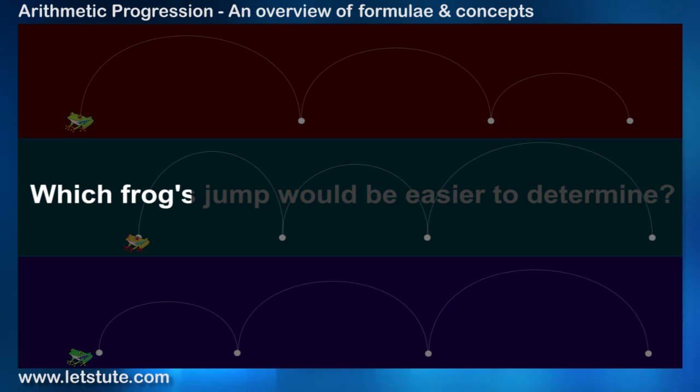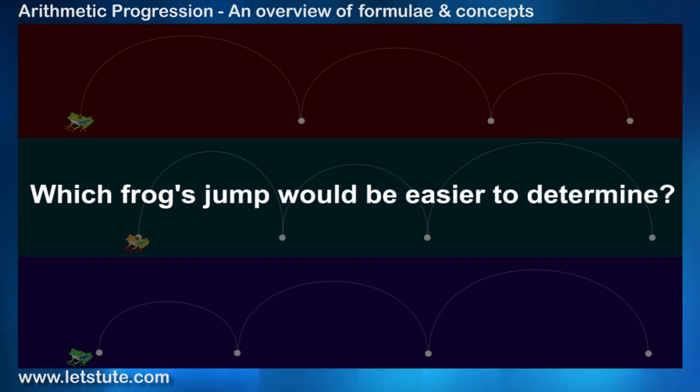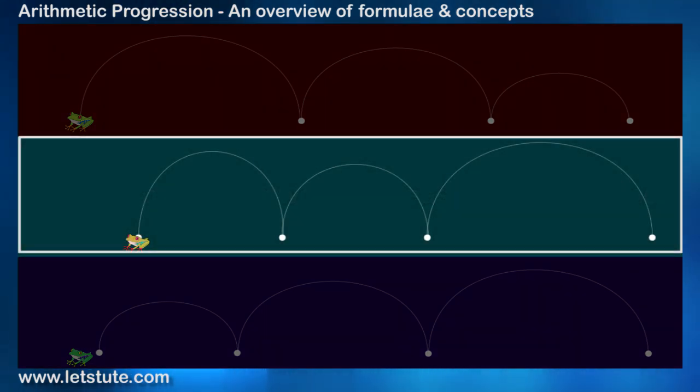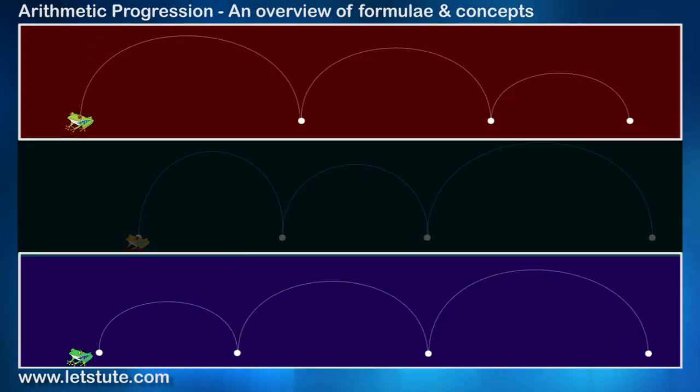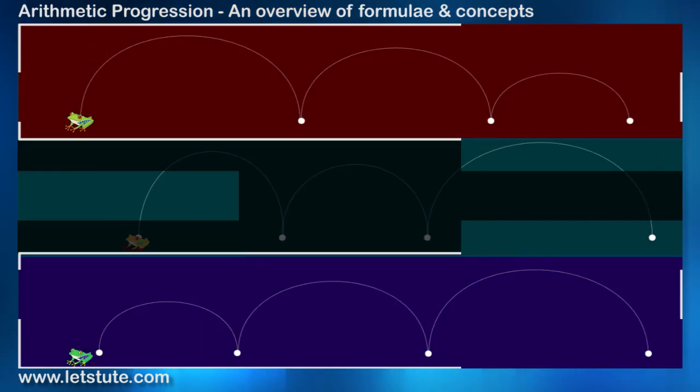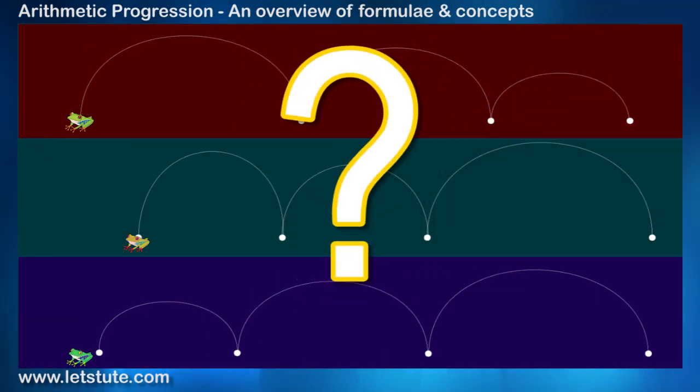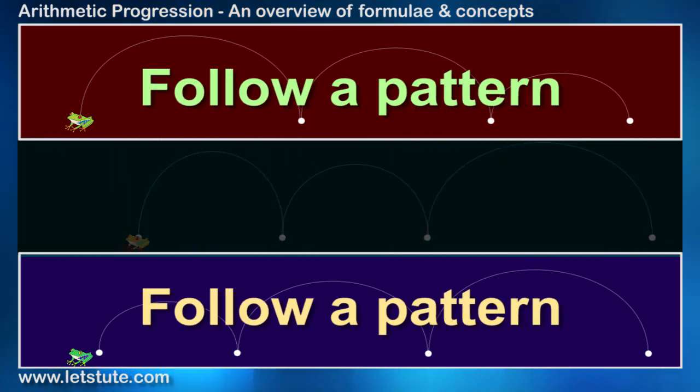Can you tell me which frog's jump would be easier to determine? For the second frog, probably it's not possible, but for the rest two we can predict the jump. And if I ask why, then an obvious answer will be because they follow a pattern, right?